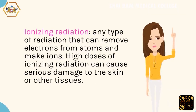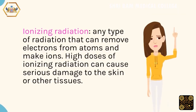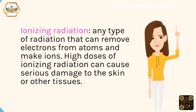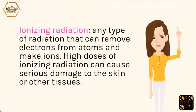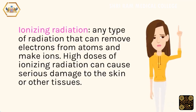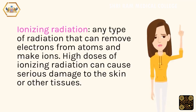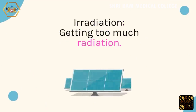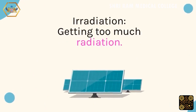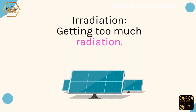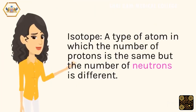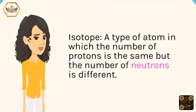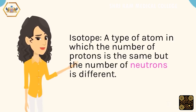Ionizing radiation: any type of radiation that can remove electrons from atoms and make ions. High doses of ionizing radiation can cause serious damage to the skin or other tissues. Irradiation: getting too much radiation. Isotope: a type of atom in which the number of protons is the same but the number of neutrons is different.